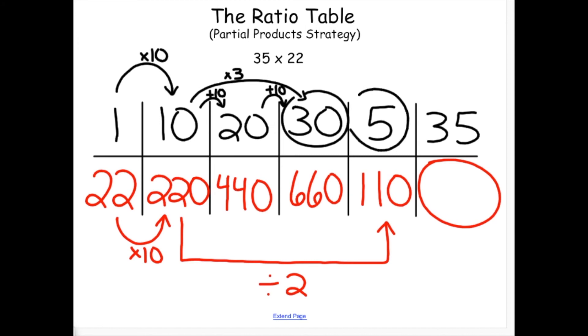If I add my 30 groups and 5 groups together, I will get my answer to the original problem 35 times 22.